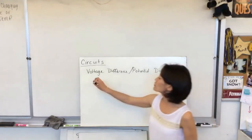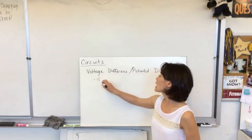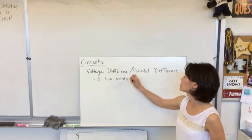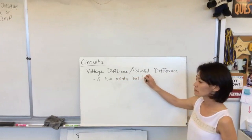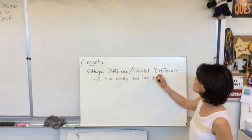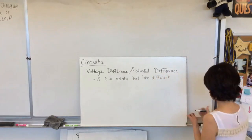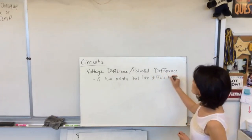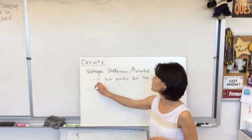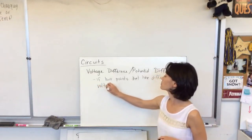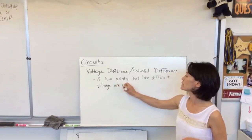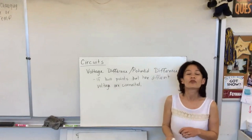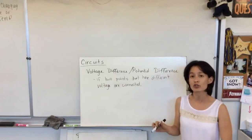it's just this idea that if two points that have differing voltage are connected, then electrons will flow from the point of high potential to the point of low potential.